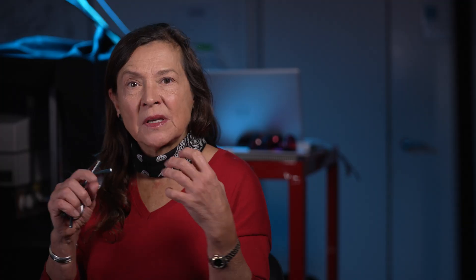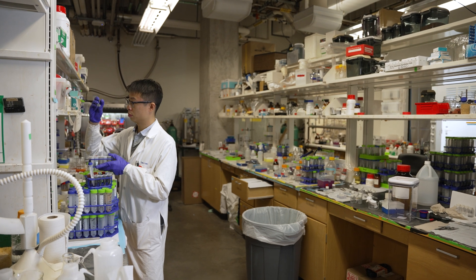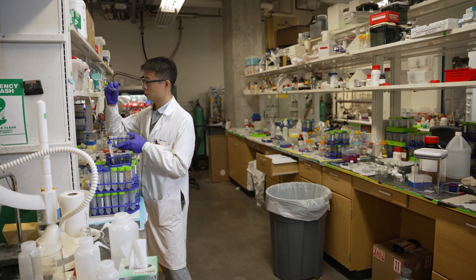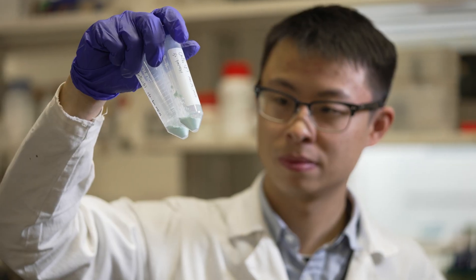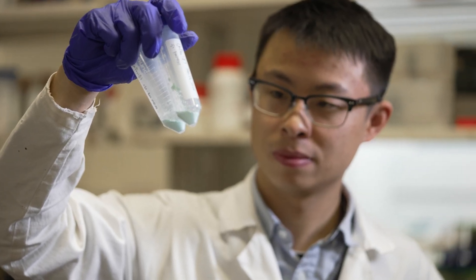We started the experiment using a copper antenna and a ruthenium reactor. The ruthenium is where the actual chemistry happens. Then my student had a really clever, kind of crazy idea. He said, instead of ruthenium, which is very expensive, why don't we try iron?